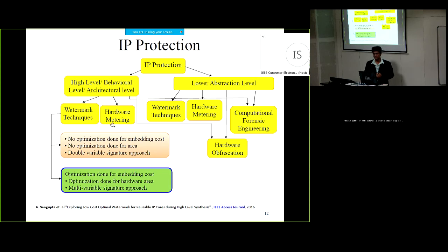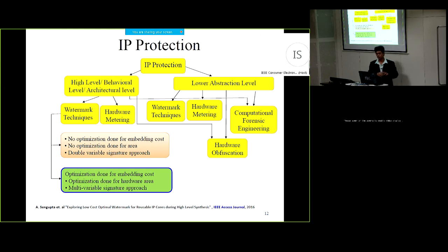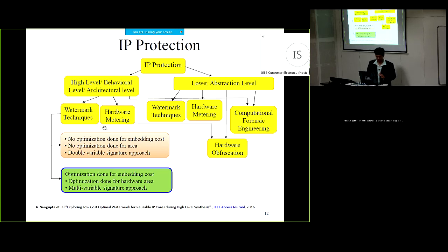Another type of protection mechanism is hardware metering, a passive protection method. It tries to generate a unique serial number for every IP generated, and these serial numbers are stored inside the EEPROM of the IP. It keeps track of the number of IPs or ICs generated to track illegally resold or redistributed copies. However, this method is quite old and is not able to protect an IP in an active mode — it can only detect IP piracy but cannot prevent it.